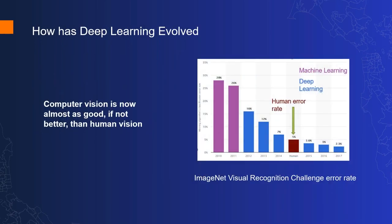Now, a little background on how deep learning has evolved. Computer vision is now almost as good as, if not better than, human vision — at least for imagery tasks. This chart shows how the error rate at recognizing images in the ImageNet visual recognition competition has gone down every year. Until 2012, machine learning was used and the error returned was around 25%. Since then, deep learning took over, and in the past few years the error rate became so low that computers got better at recognizing images than humans. They had to discontinue the competition because we humans can no longer judge a machine that's better than us at extracting features.